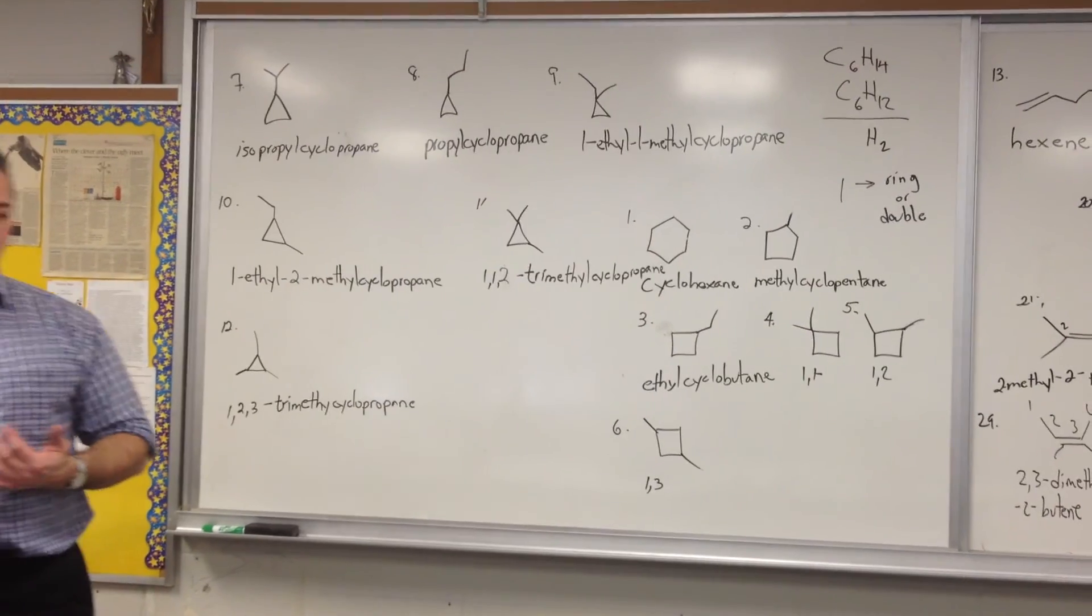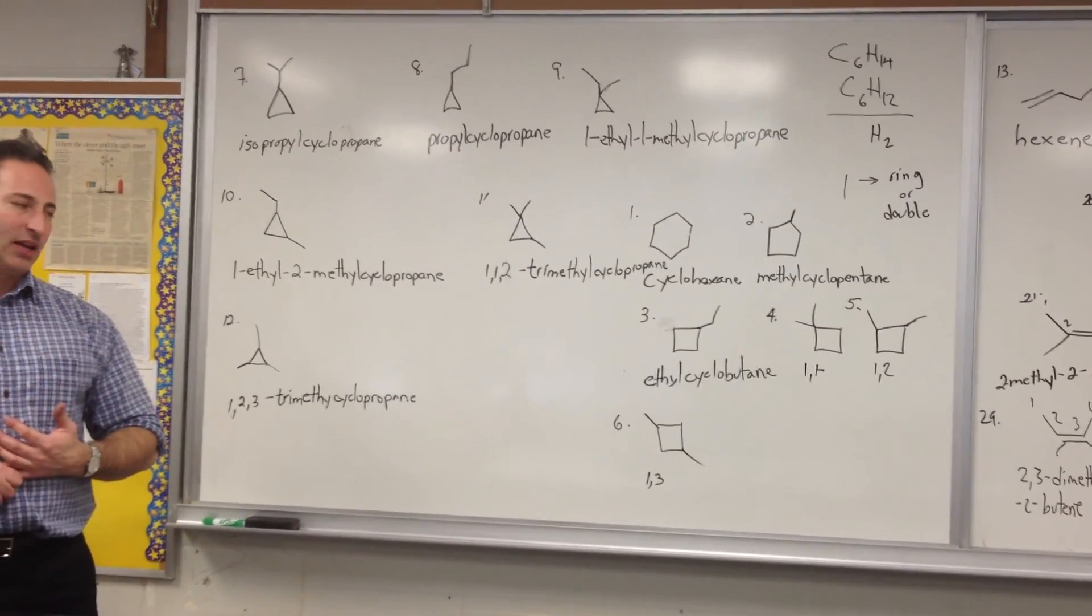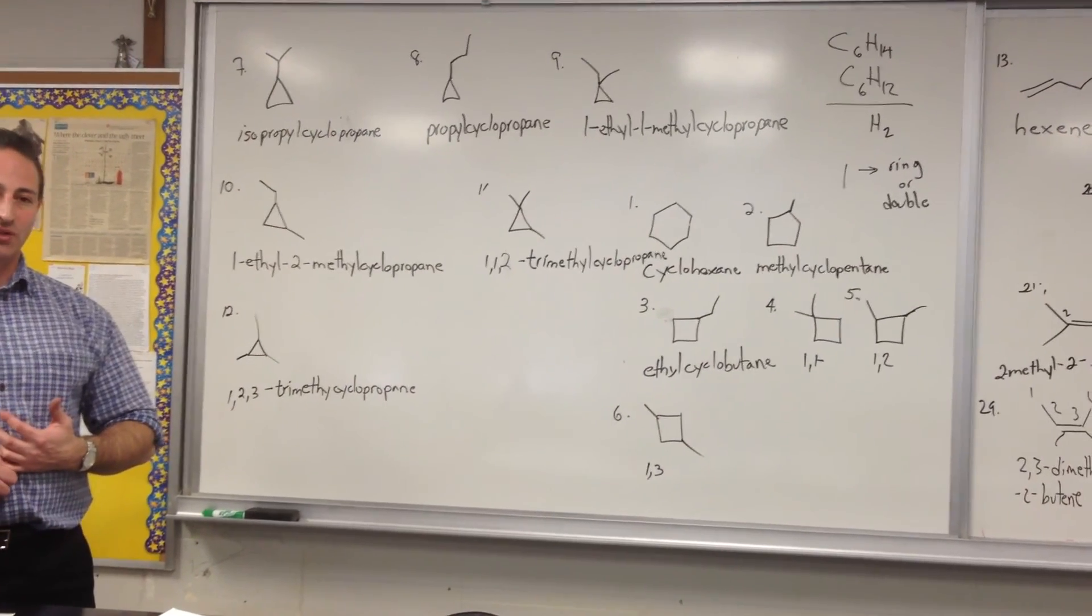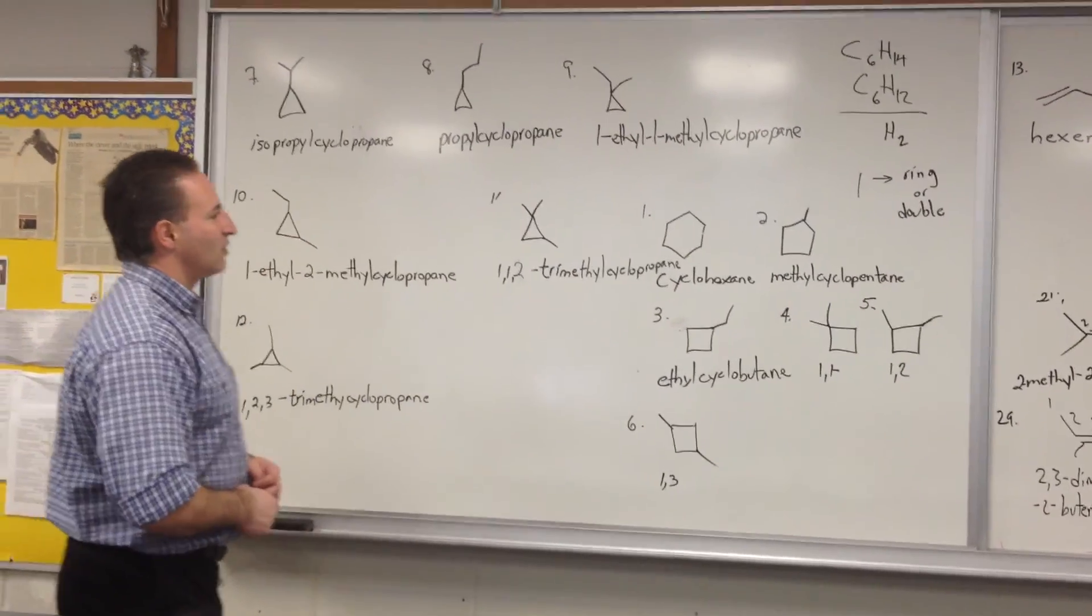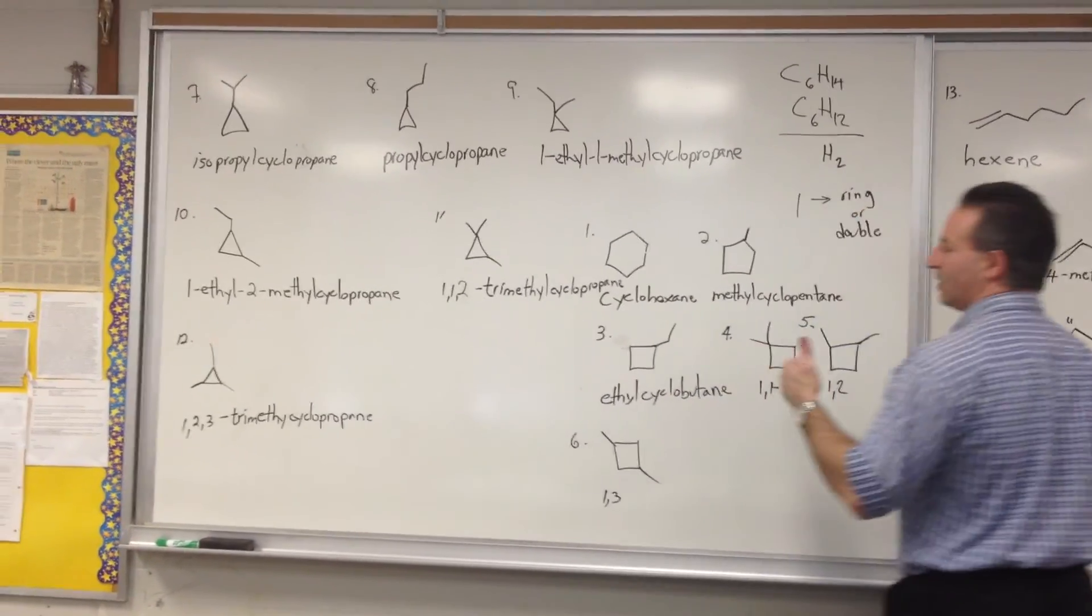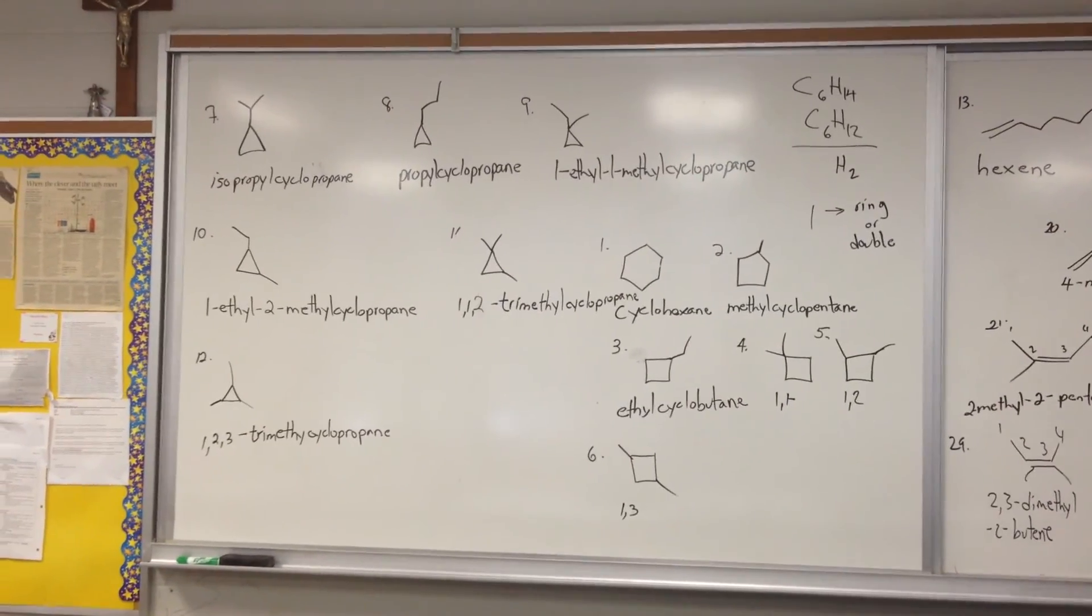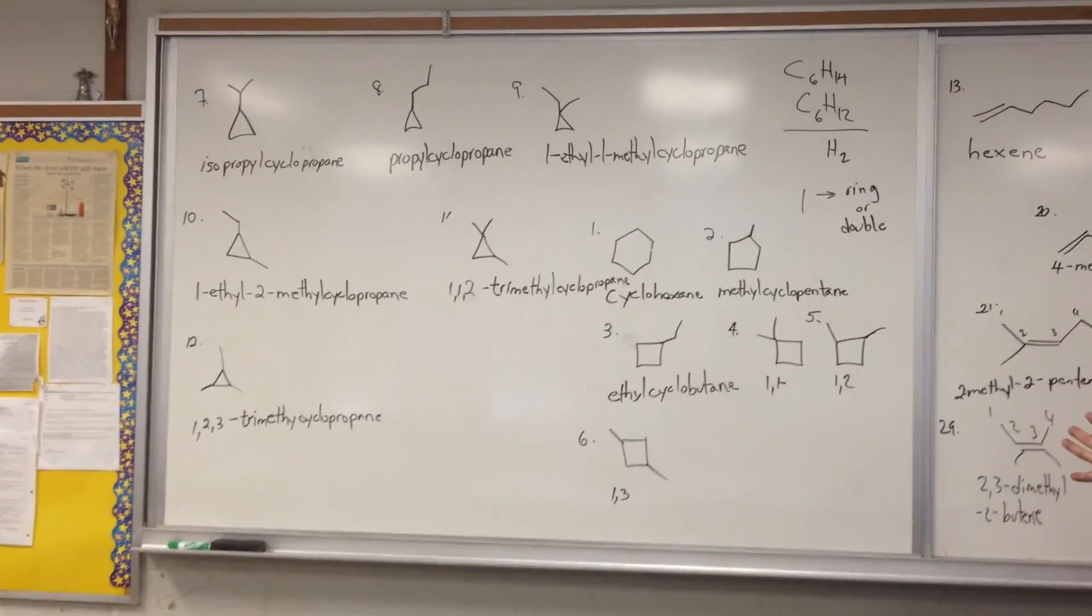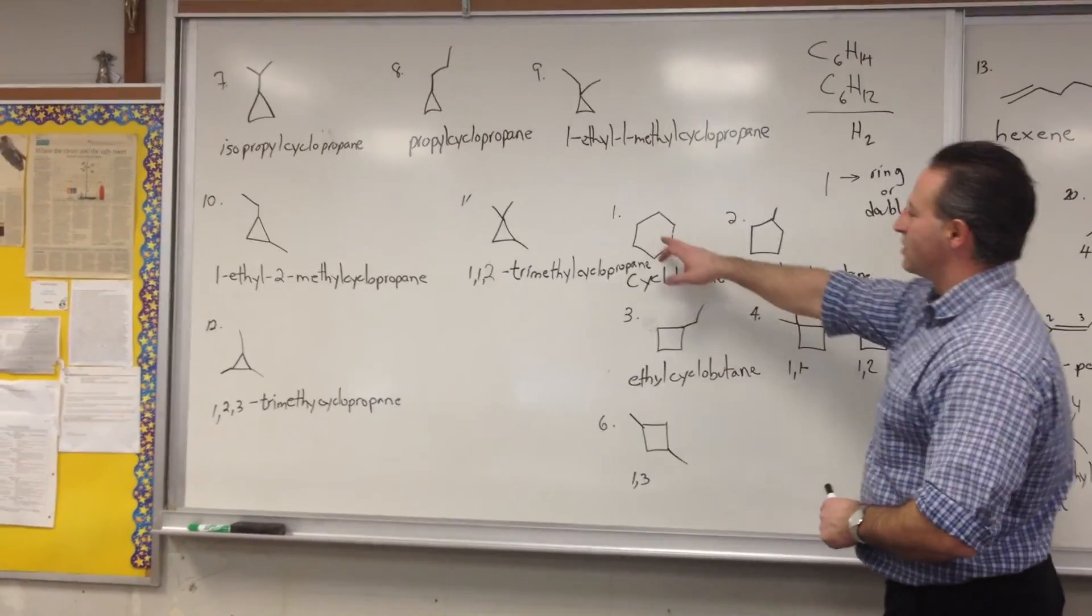So it's missing 8 hydrogen atoms. We'll continue now with all the different isomers that you can draw. We have to draw all the isomers that either have a ring or a double bond. The best way to answer this question is to do it systematically. Start with the biggest ring and work your way down. So the biggest ring you can draw using 6 carbons is cyclohexane.